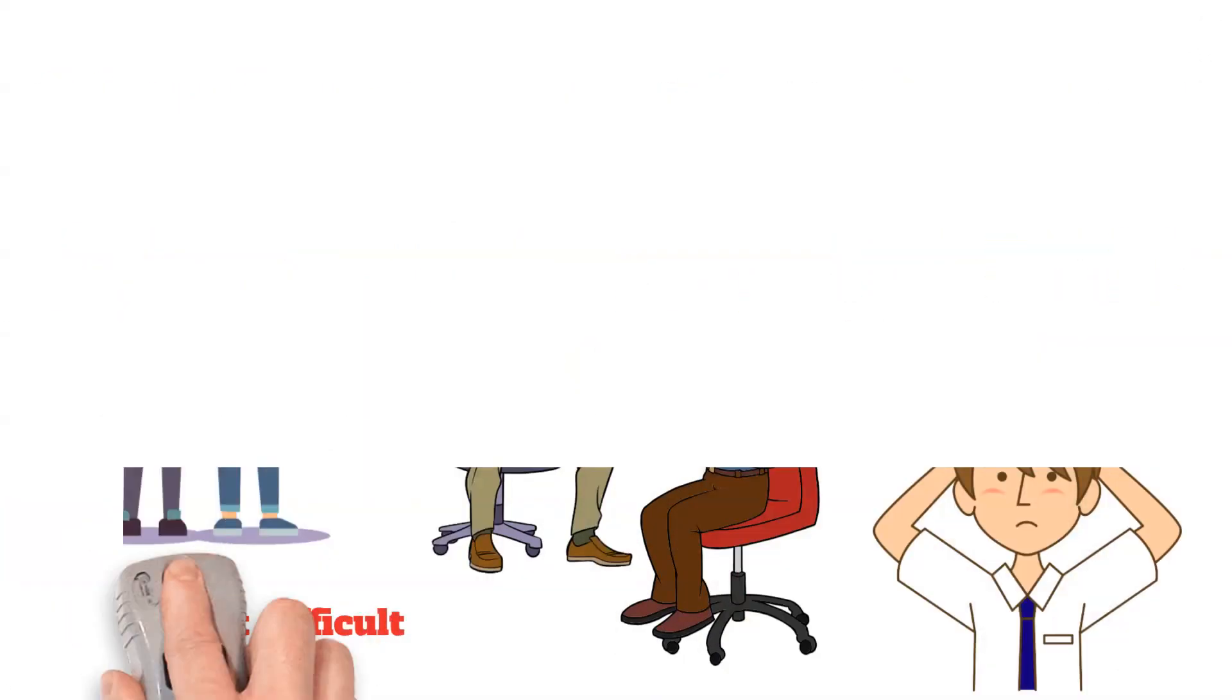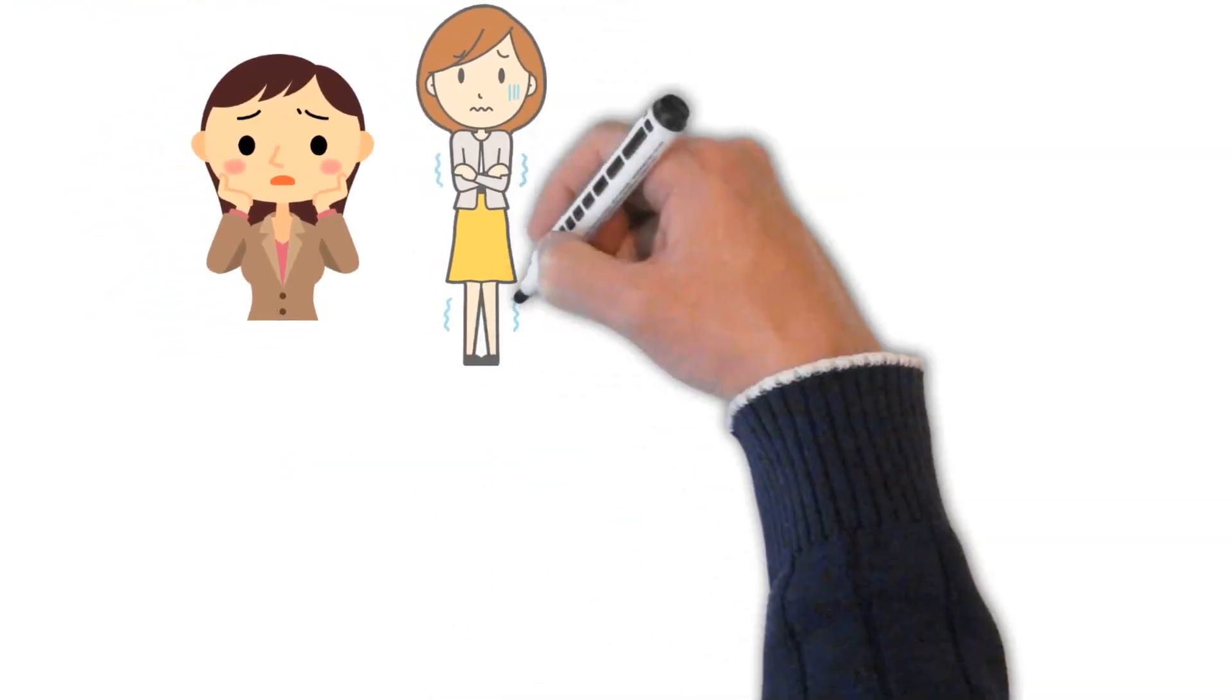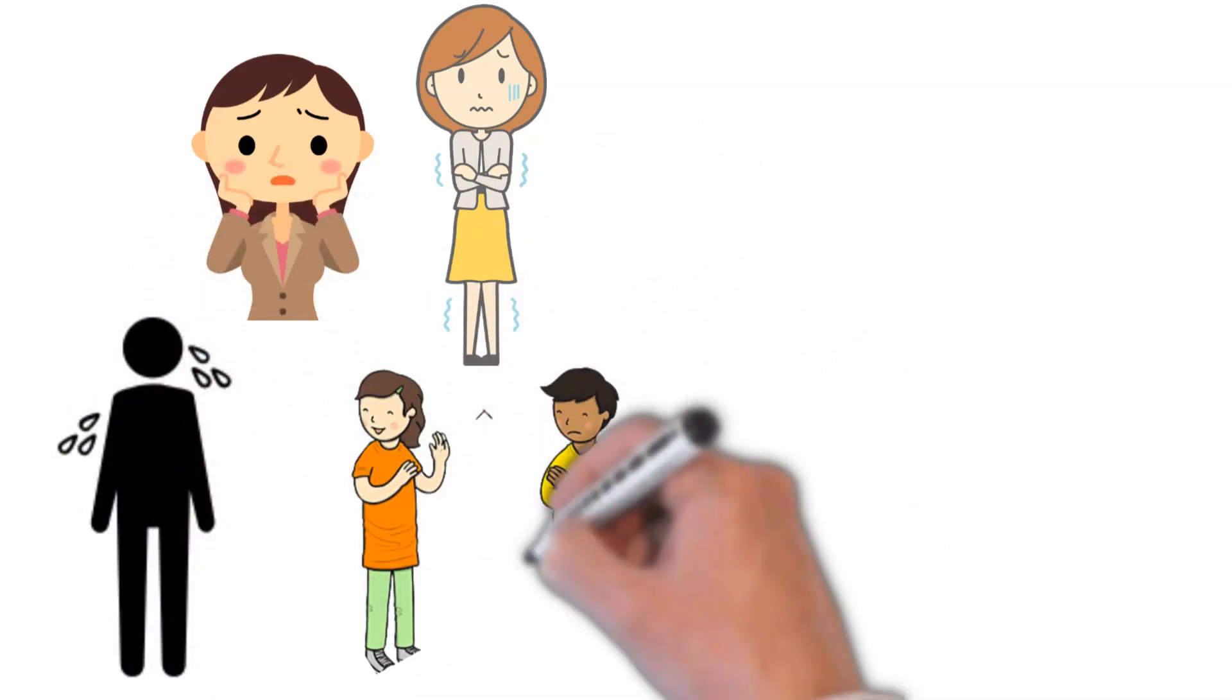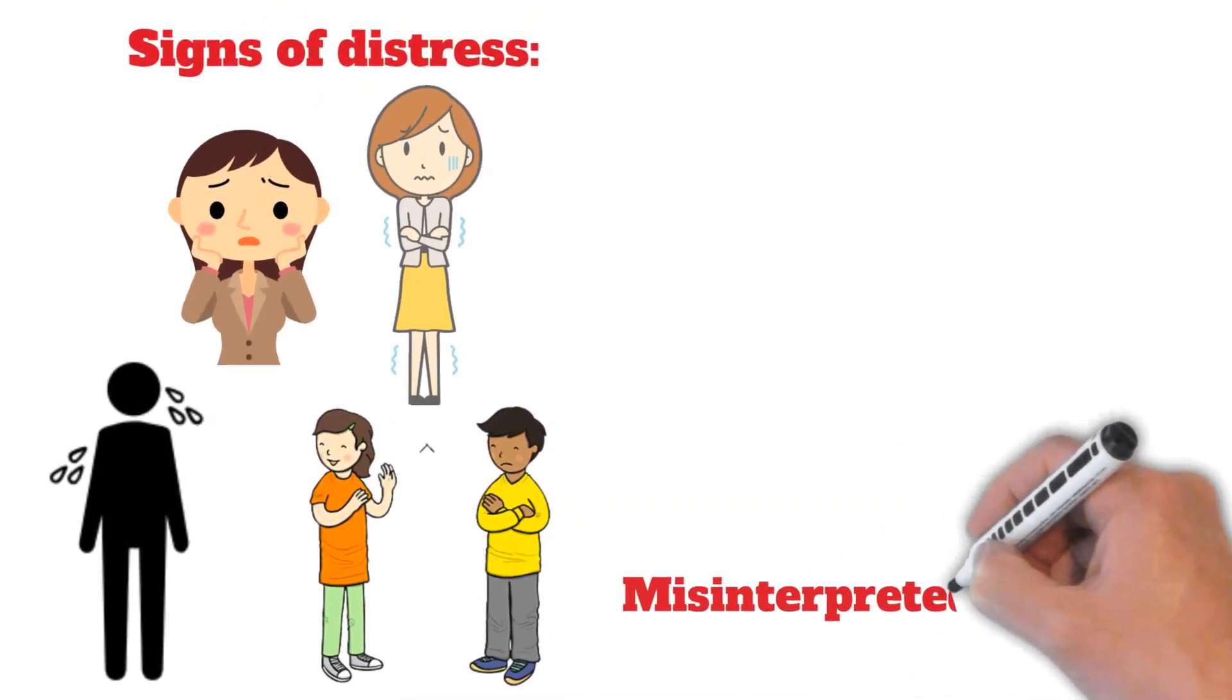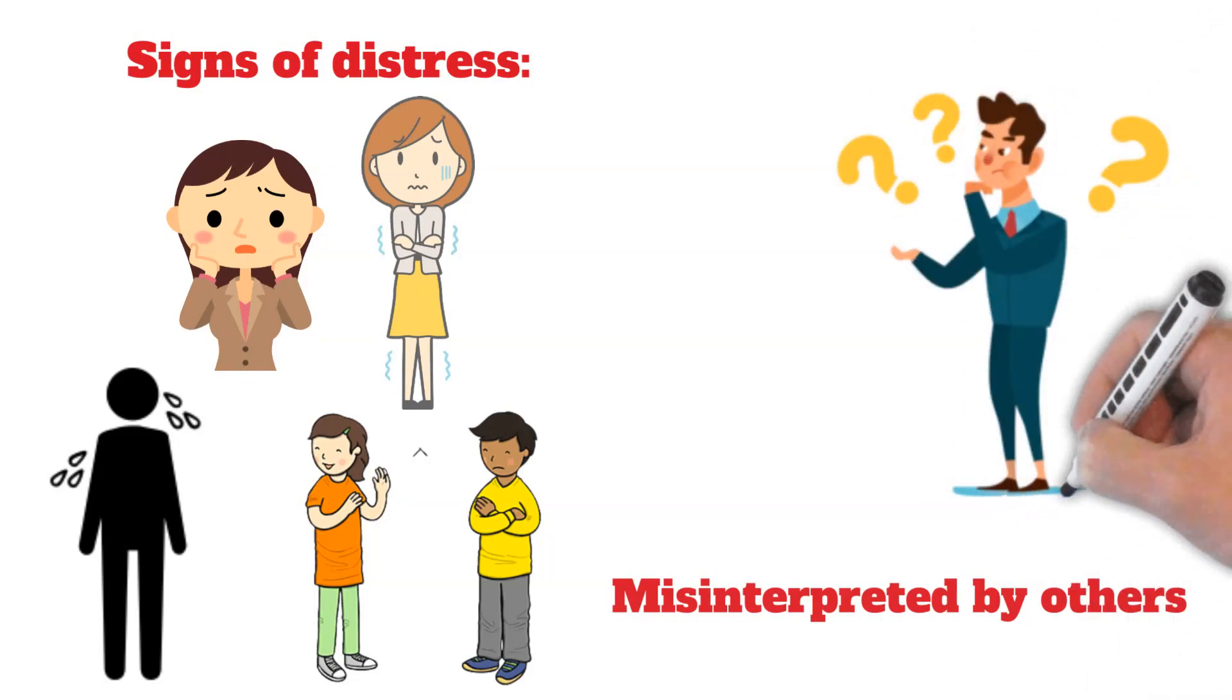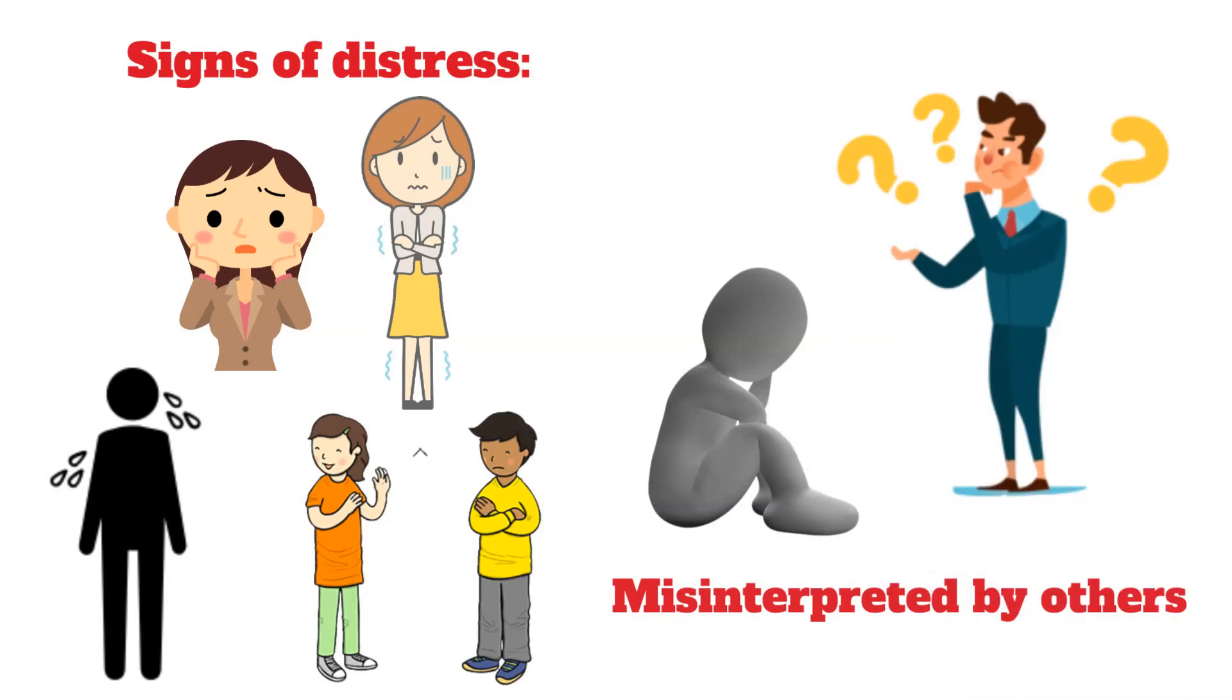Additionally, they could exhibit observable signs of distress such as blushing and shivering, perspiration, and trouble meeting other people's eyes face to face. These symptoms can be misinterpreted negatively by others who may not be aware of this disorder, further isolating the socially anxious person.